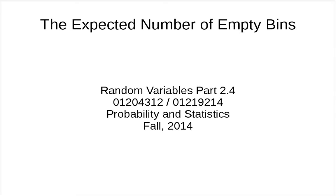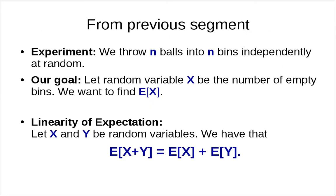In this clip we will use the linearity of expectation to compute the expected number of empty bins. Recall from the previous segment: in our experiment we throw n balls into n bins independently at random. Our goal is to compute the expected value of random variable X, which is the number of empty bins. We'll use linearity of expectation, which says that if you have two random variables, the expected value of the sum equals the sum of the expectations.